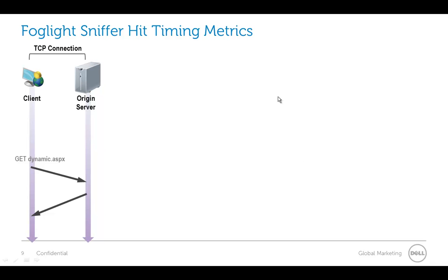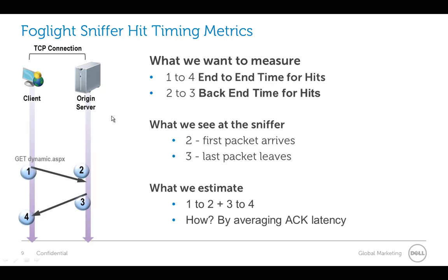The last thing we want to look at is a hit. A hit is a very simple representation of a page. For each hit we're looking for the end-to-end time — we see when the hit goes in and when it comes out of the sniffer, we see points 2 and 3, and we estimate the 1-to-2 and 3-to-4 by looking at acknowledgement packets. There is no hit information from instrumentation available today; however, there is a standards committee currently looking at that. The current standard we have is the navigation timing API, and there's a new one called the resource timing API, which will eventually be able to give you hit information on every page using instrumentation.